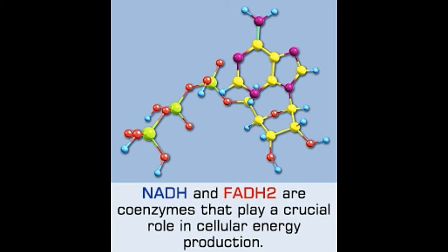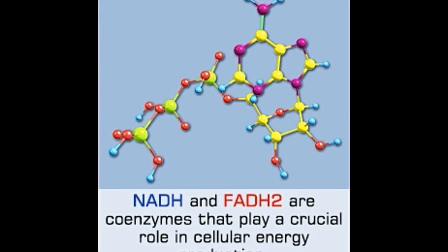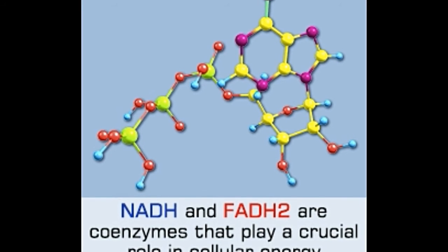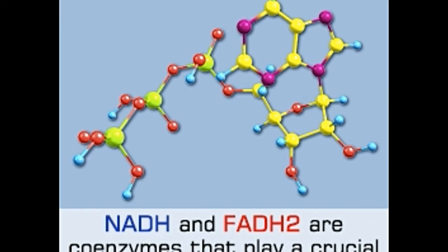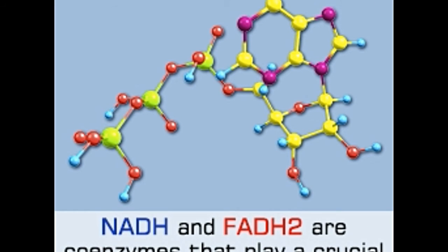Function of NADH and FADH2: NADH and FADH2 in our body play a crucial role in cellular energy production. The food that is consumed cannot be directly used as a source of energy. Metabolism involves a series of chemical reactions.